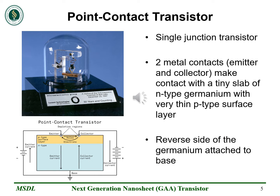Let's look at the very first point-contact transistor. It is a single-generation transistor with two metal contacts: emitter and collector. These two contacts make contact with a small slab of N-type germanium with a very thin P-type surface layer. The reverse side of the germanium is attached to the base. Very small positive current changes on the emitter cause a greater change in current flow between the collector and the base — that's how it works as an amplifier.